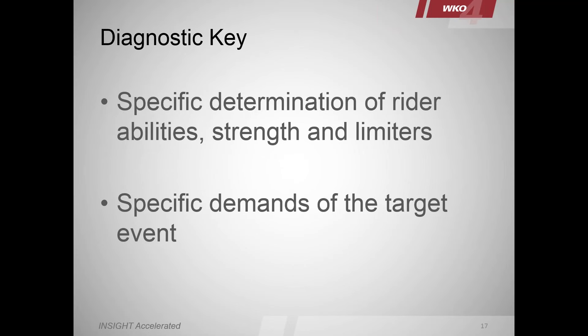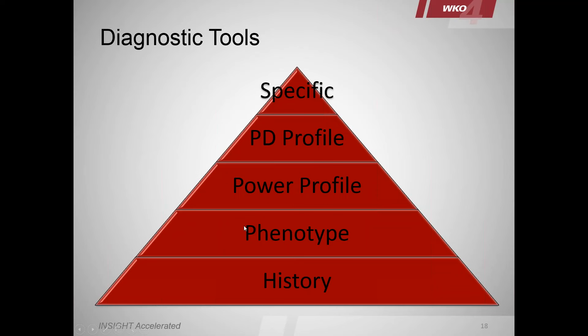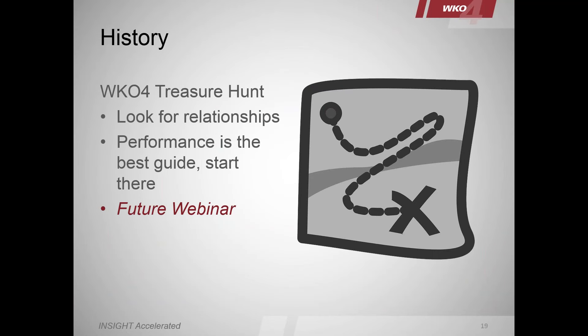I'm going to break my presentation into three phases: diagnostic, prescriptive, and tracking of adaptation. One key to diagnosis is it's a pretty simple process that's really complex to do. You need two key elements: a specific determination of the rider's abilities — strengths and limiters — and the specific demands of the target event. When we look at diagnostic tools, we have history, phenotype, power profile, power duration profile, and some specific analytics. History is always like a treasure hunt — we look at data, looking for patterns and unique relationship analysis.